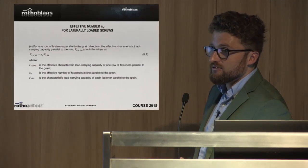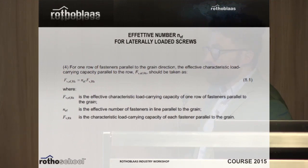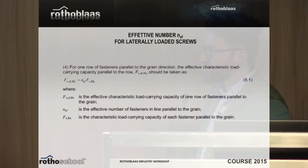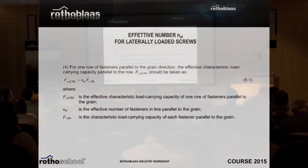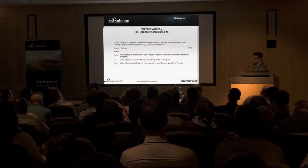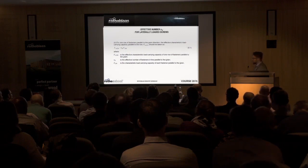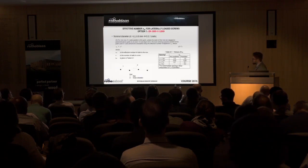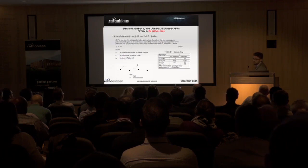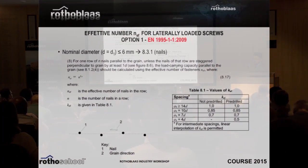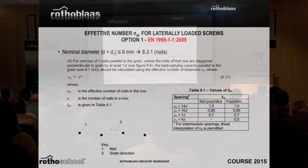Furthermore, we have determined the resistance value and established minimum distances. We also have to take into account that when placing more connectors together, this group of connectors is not simply the sum of each connector — we have to reduce values due to the group effect on the timber. However, the code says that if we use a staggered installation we cannot decrease the effective number. But we must always apply a reduction factor when we have many connectors placed together.